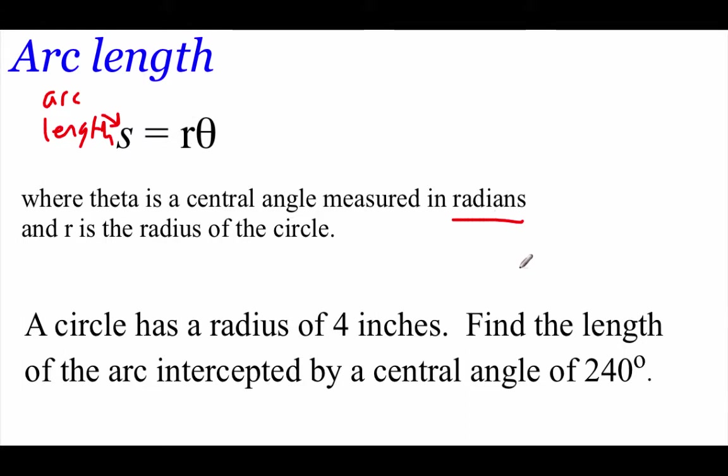If we take a look at the example down at the bottom of the page, it says we've got a circle with a radius of 4 inches. We're going to find the length of the arc intercepted by a 240 degree angle. Now, I do see that our angle is given to us in degrees. In order to use this formula, it's got to be a radian angle. So we're going to have to do a little conversion before we get started.